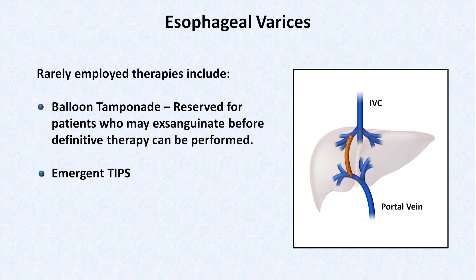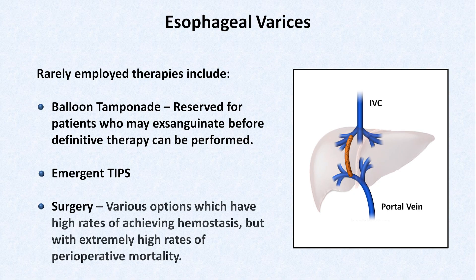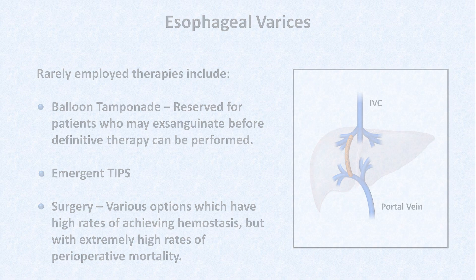The absolute last choice for the definitive management of a life-threatening and refractory variceal bleed is an emergent surgical procedure to create a portal systemic shunt. There are various surgical options, all of which have high rates of achieving hemostasis, but with extremely high rates of perioperative mortality. That concludes this video on esophageal varices and the management of acute GI hemorrhage and cirrhosis. I hope you'll consider viewing my other videos on the acute complications of cirrhosis, including SBP, hepatic encephalopathy, and the hepatorenal syndrome.